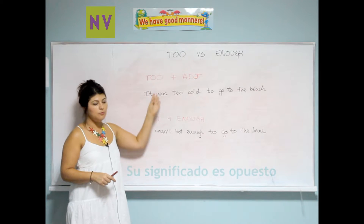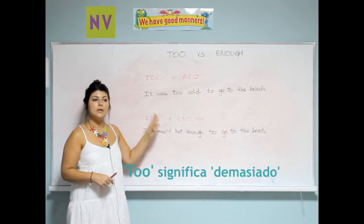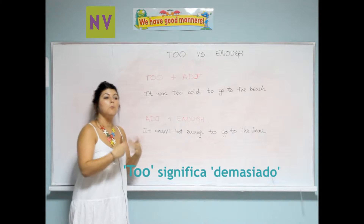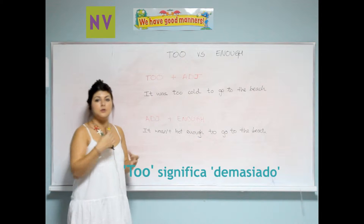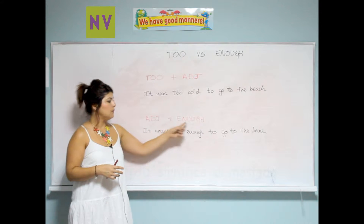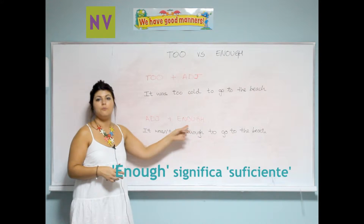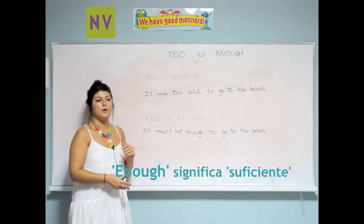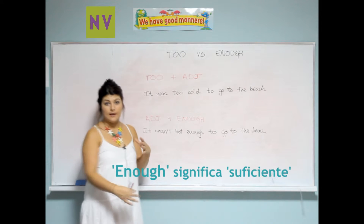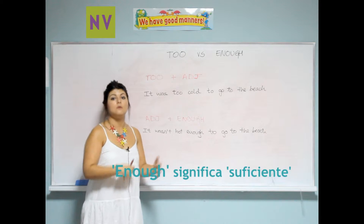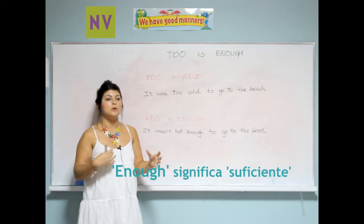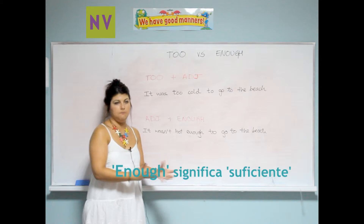We use 'too' when we want to say that something is more than it should be, and we use 'enough' when we want to express that something is less than it should be, or less than what I want it to be.